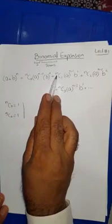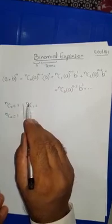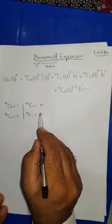nC0 is equal to one. Whenever we have a zero down, it gives us one, so 5C0 will give you one. Now when we talk about nC1, when we have down one, it gives us the number above it, n. So 5C1 will give us 5.